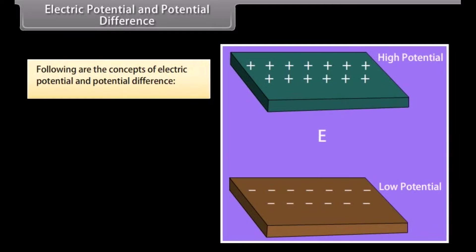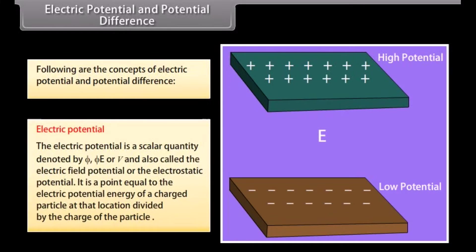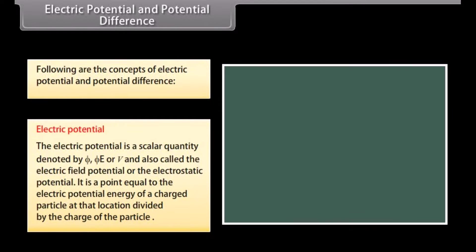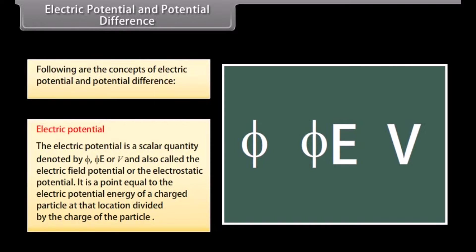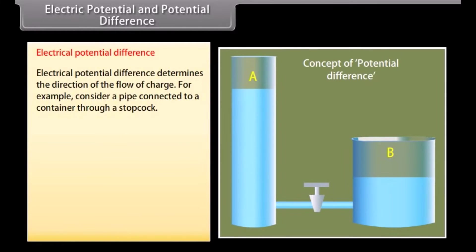Let us look at the concepts of electric potential and potential difference. Electric potential is a scalar quantity, denoted by E or V. It is defined as the electric potential energy of a charged particle at a location divided by the charge of the particle.